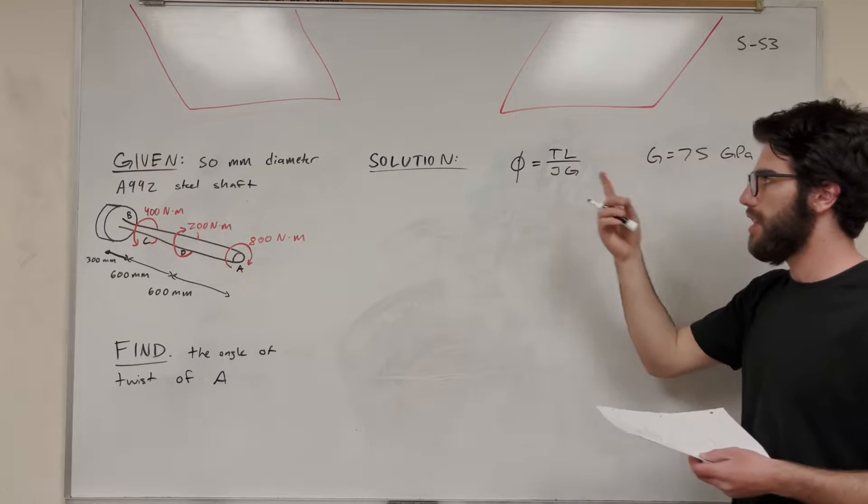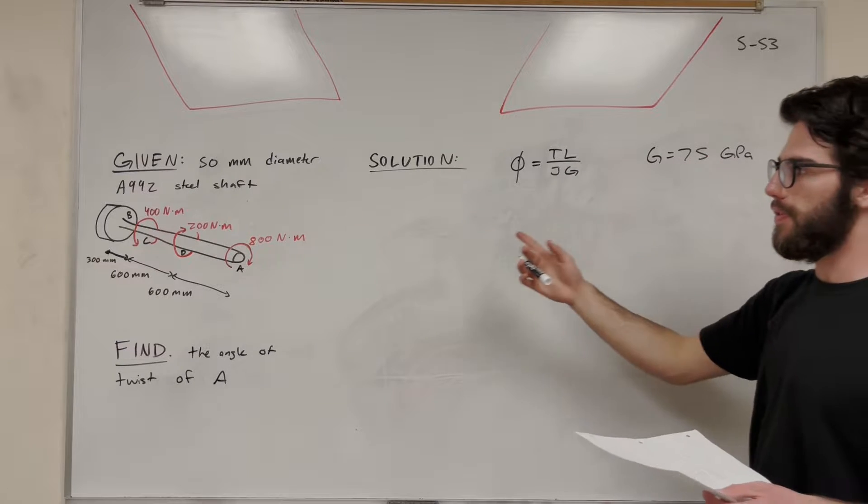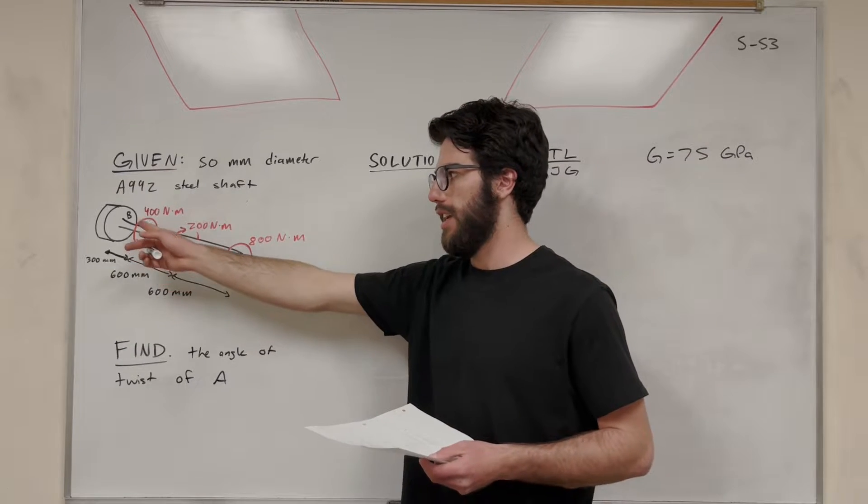So we're going to be using the angle of twist formula, TL over JG. We're going to add all those up for each of these segments, AD, CD, and BC.